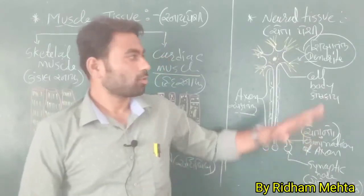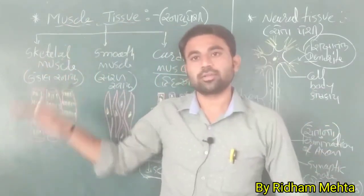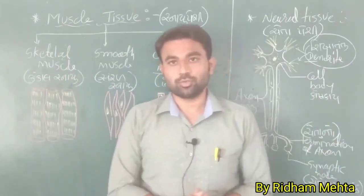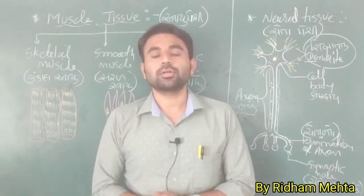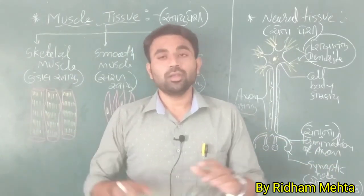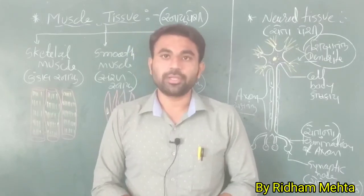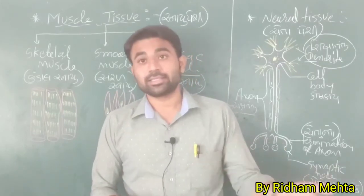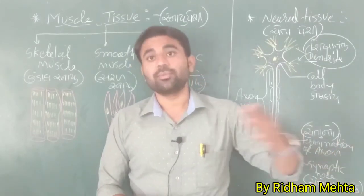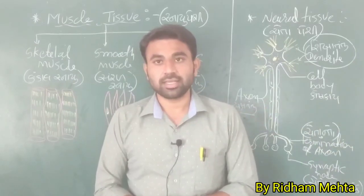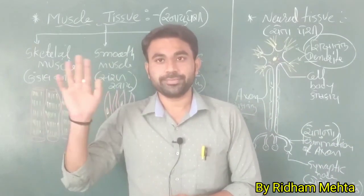This concludes the nerve tissue and muscle tissue topics. These were the two remaining tissue types, so today the chapter on tissues is complete. In the next lecture, we will start with different animals and earthworms.